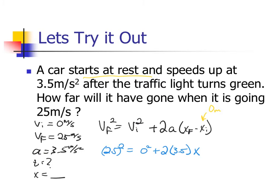I can then do some calculations and get rid of some of the values. By squaring 25 I would get 625, and that would equal because zero squared would just be zero, 2 times 3.5 would be 7x. Divide both sides by 7, x should equal 89.3 meters.